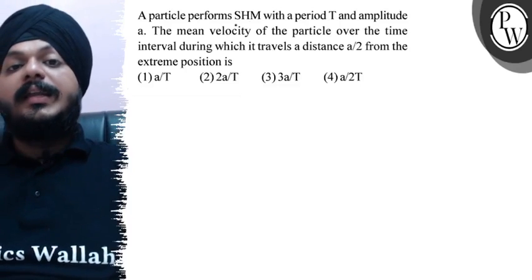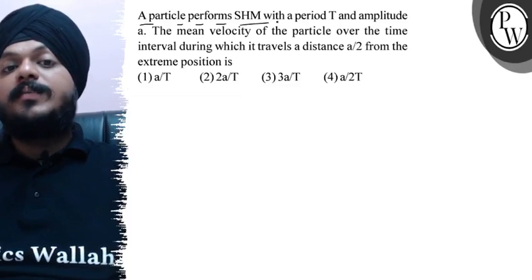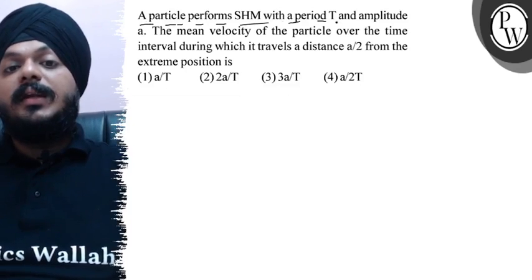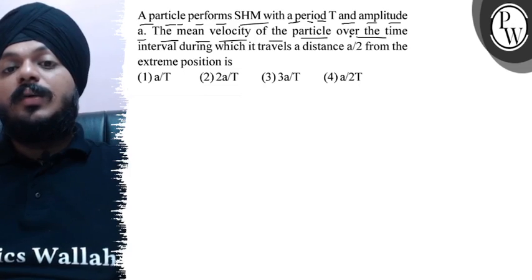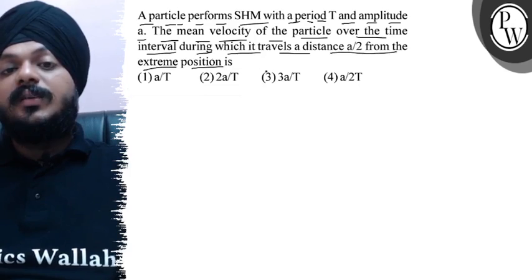Hello, let's see this problem. A particle performs SHM with a period T and amplitude a. The mean velocity of the particle over the time interval during which it travels a distance a by 2 from the extreme position is...